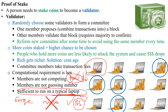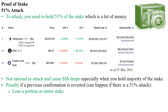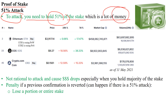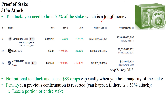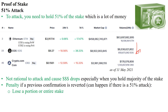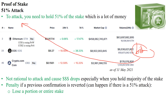To attack a proof of stake network, you would need to hold at least 51% of the stake, which requires enormous amounts of money. Looking at the market cap of major cryptocurrencies — 458 billion, 8.9 billion, 3.9 billion US dollars — unless you have billions of US dollars, you don't need to think about how you would attack the network.